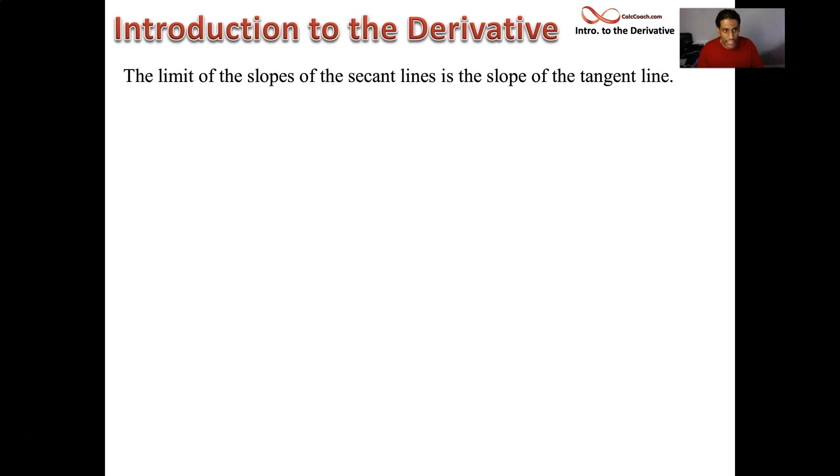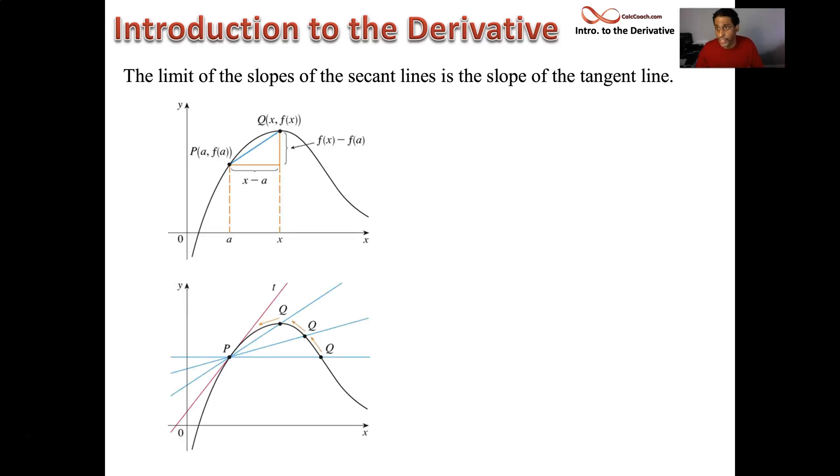So in the last set of videos, we looked at the limit of the slopes of the secant lines being equal to the slope of the tangent line. We have these two drawings here.